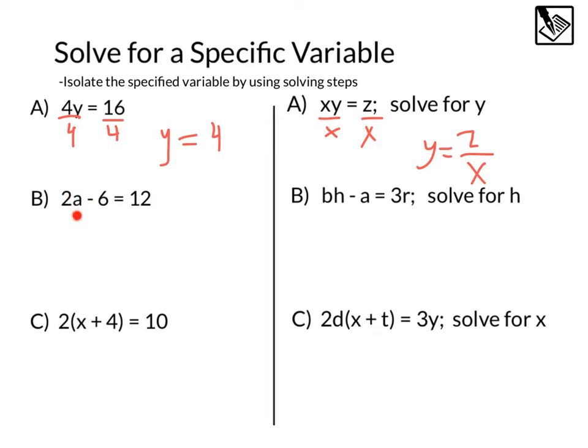Moving on, example B, 2A minus 6 equals 12. In solving this, we would usually add 6 both sides, we'll get 2A equals 18, then we can divide by 2 both sides, and we'll get an answer of A equals 9.